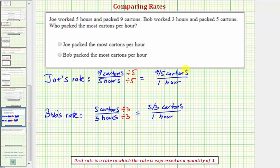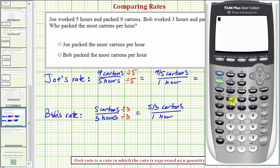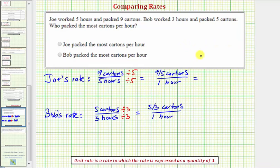To make an easy comparison though, let's convert our fractions to decimals. So for Joe's rate, we'd have nine divided by five cartons per hour, which would be one point eight cartons per hour.